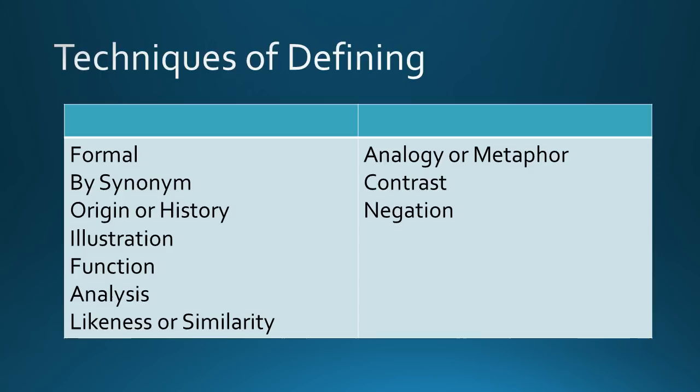Next, by illustration. This is by showing the characteristics of what is being defined. For example, named for their habit of shedding their leaves in the fall, the deciduous trees include such varieties as oaks, maples, and beeches.